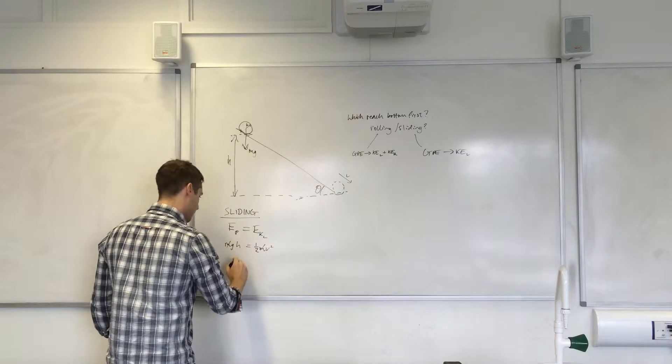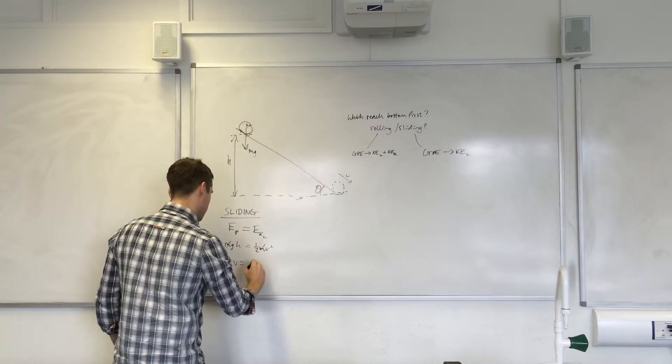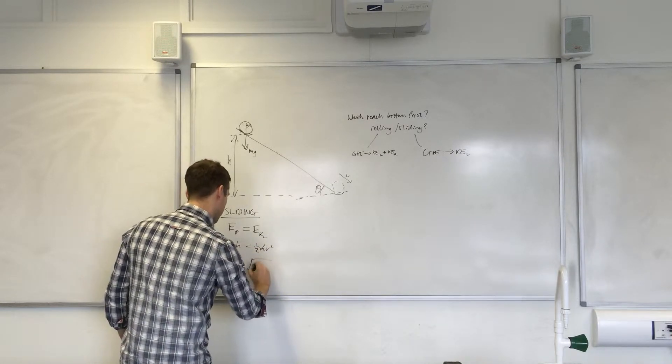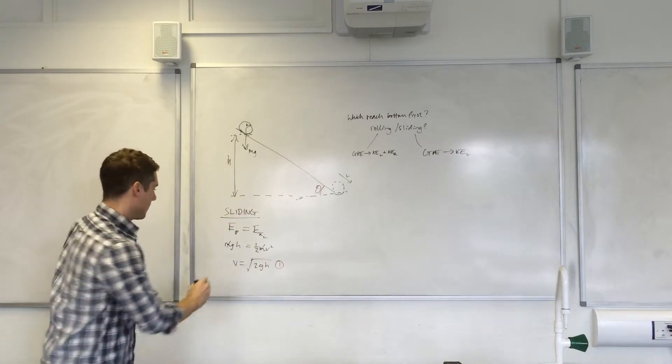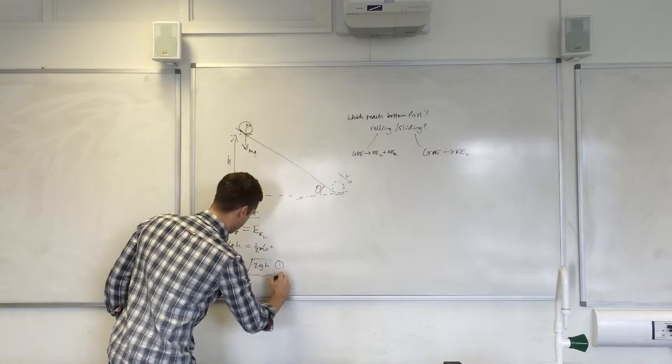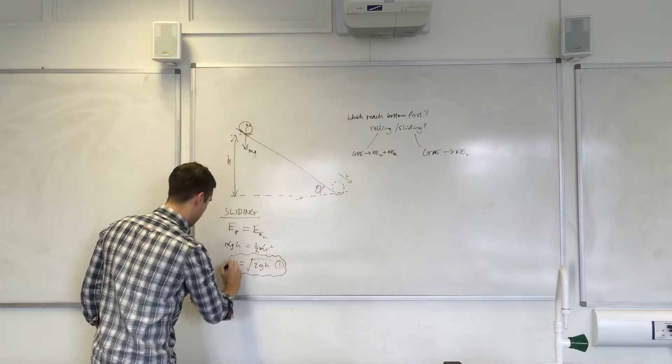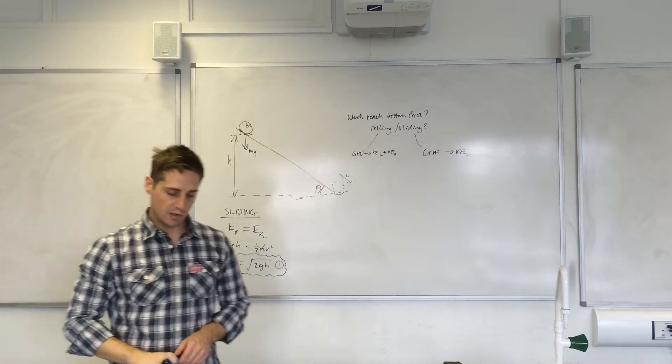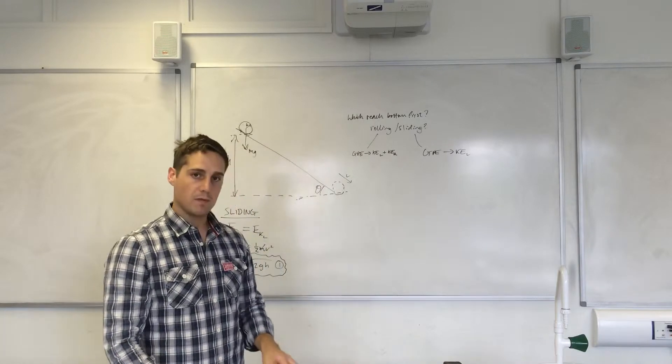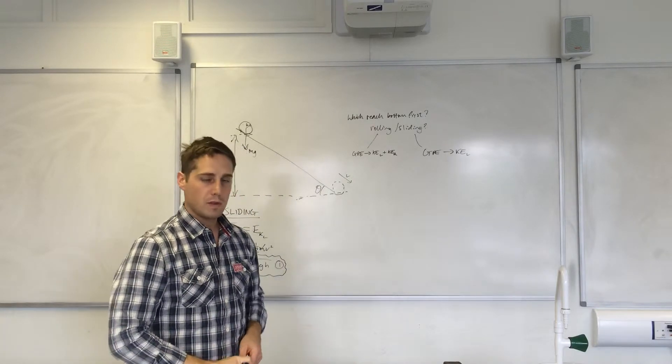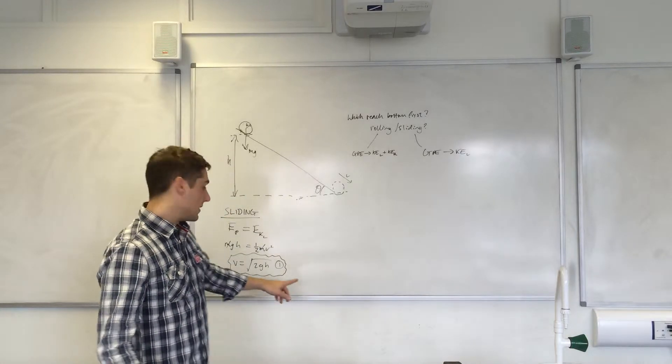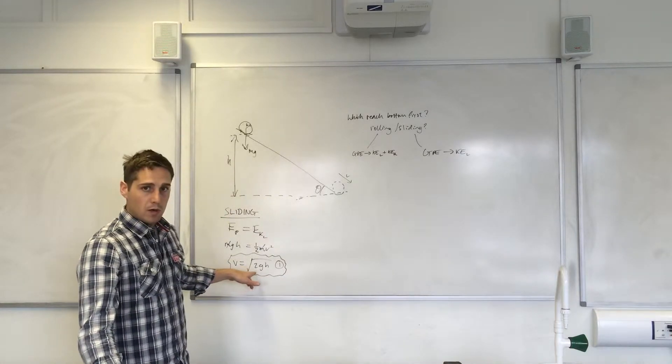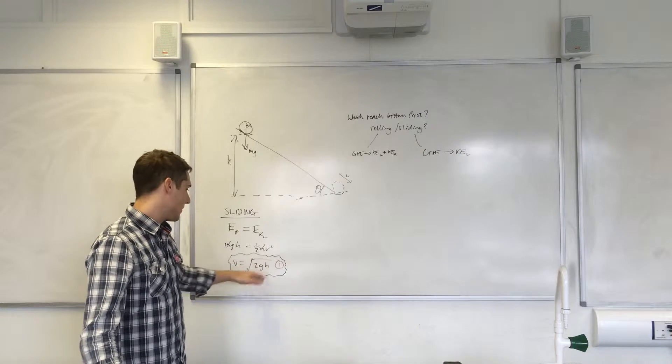And that's our first equation that tells us about the velocity if the object were to slide down. And that, actually, incidentally, is a very common equation in mechanics—keeps coming up.